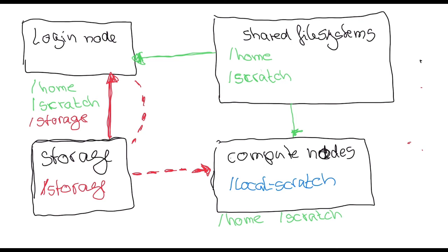Users should think about how data is used during their calculations: do they need to read in large input files? Does that data need to be available throughout the calculation? Are the calculations writing out many small files, many large files, or just one large file? Do those output files need to be kept after the calculation, or can they be discarded? Users really have to be aware of how data is used before, during, and after calculations, and then make a well-informed choice on their data workflows.